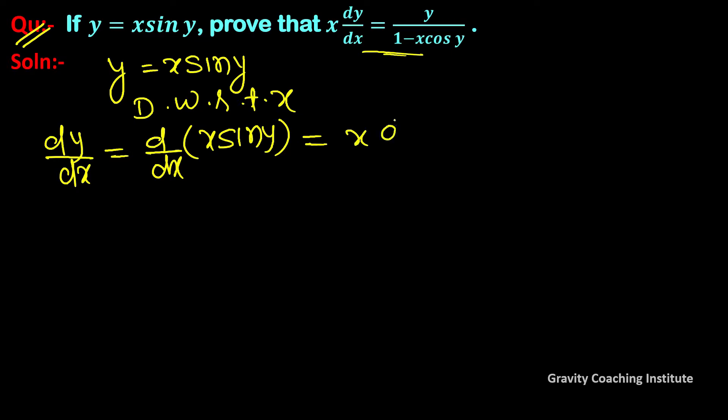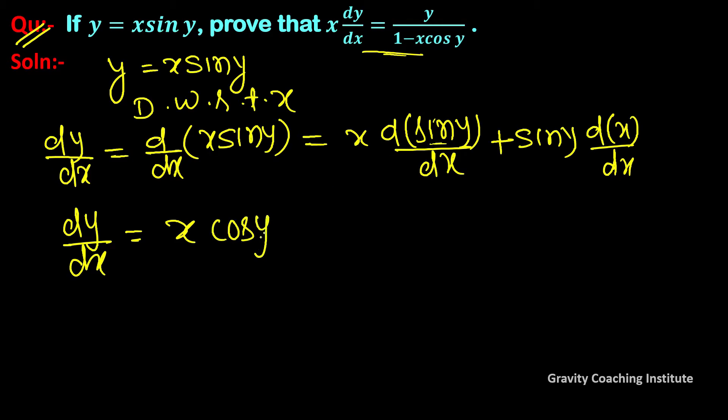x times the derivative of sin y plus sin y times the derivative of x. So dy/dx = x cos y dy/dx + sin y.